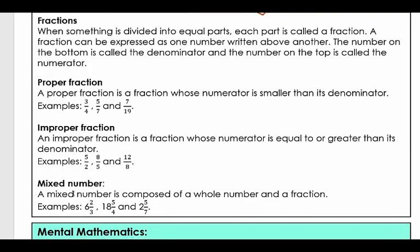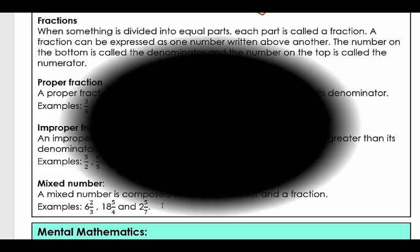And then lastly, a mixed number. A mixed number is composed of a whole number and a fraction. So the examples: six and two thirds, eighteen and five quarters and two and five sevenths.